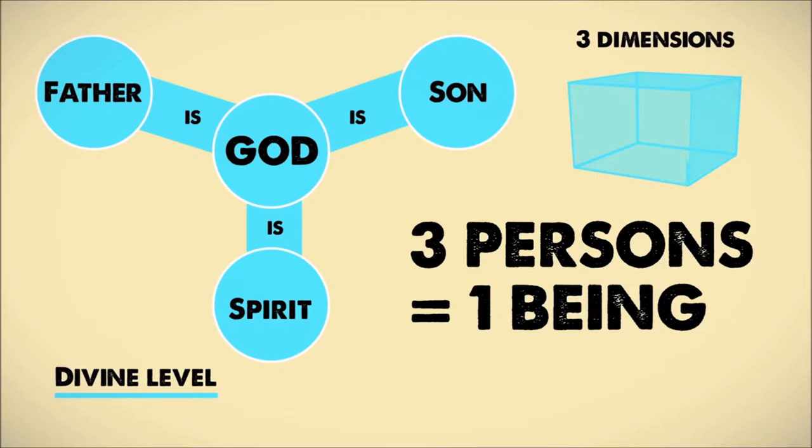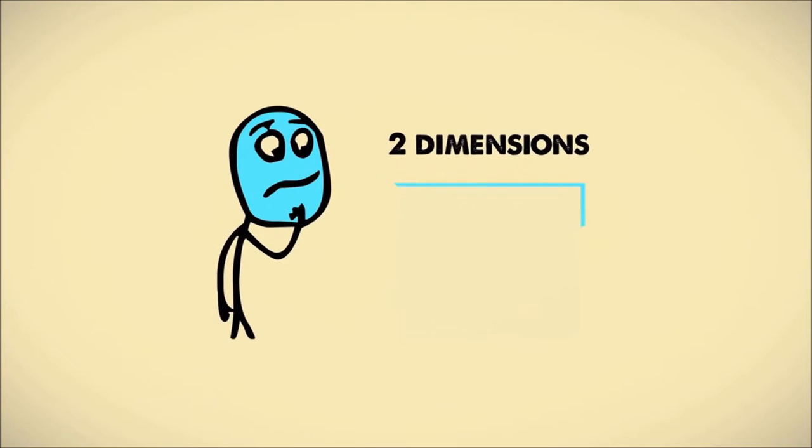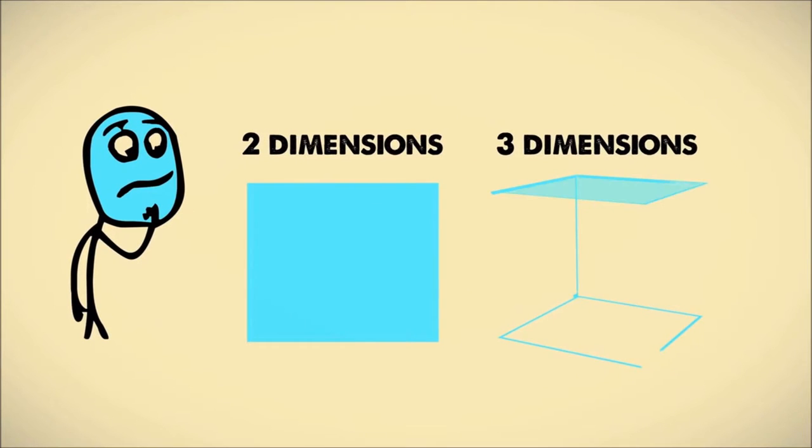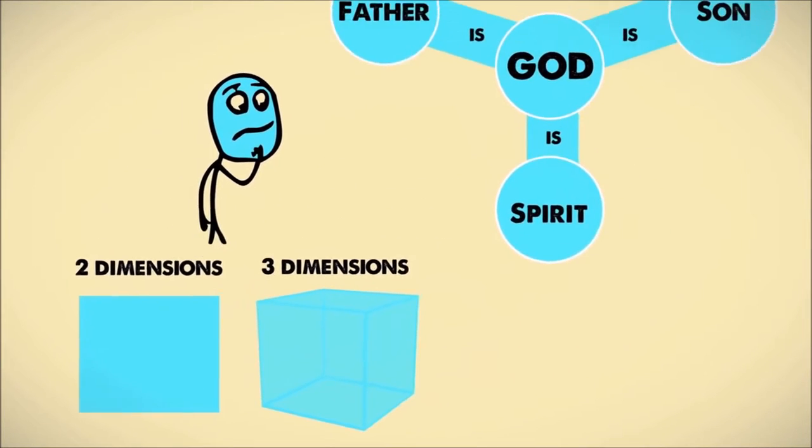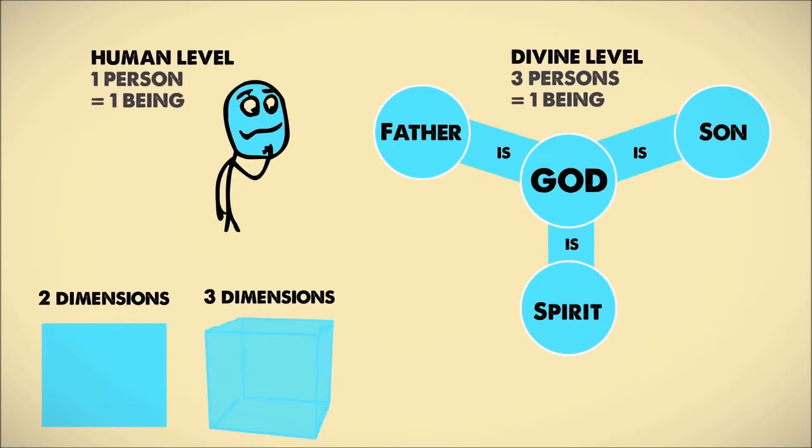Of course, Lewis admits we cannot fully conceive a being like that. Just as, if we were so made that we perceived only two dimensions in space, we could never properly imagine a cube. But we can get a sort of faint notion of it, and when we do, we are then, for the first time in our lives, getting some positive idea, however faint, of something super personal, something more than a person.